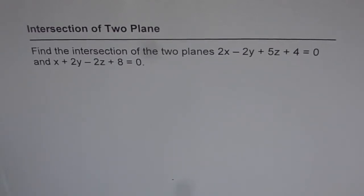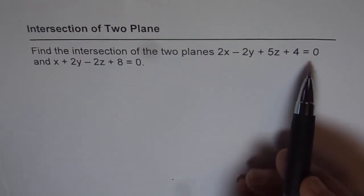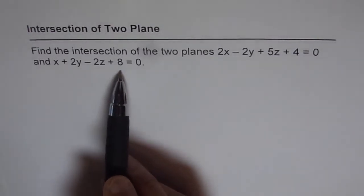Intersection of two planes. Find the intersection of the two planes 2x - 2y + 5z + 4 = 0 and x + 2y - 2z + 8 = 0.